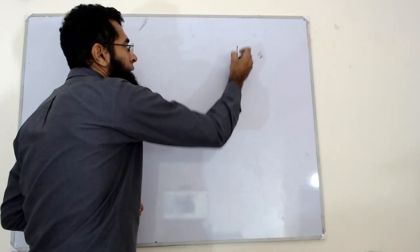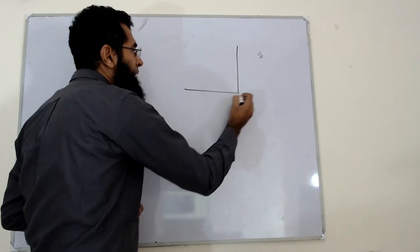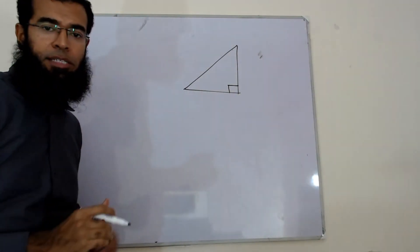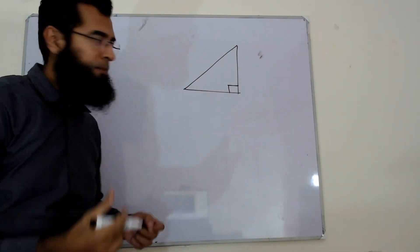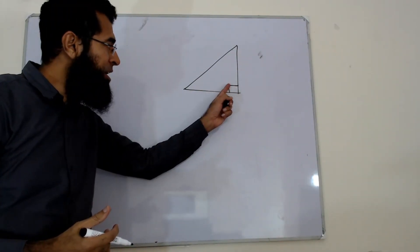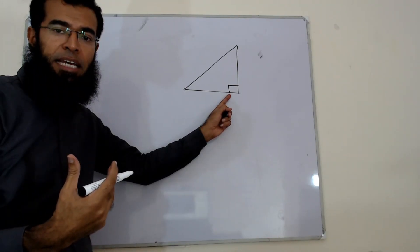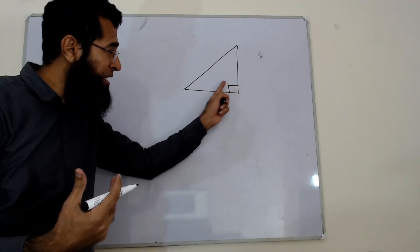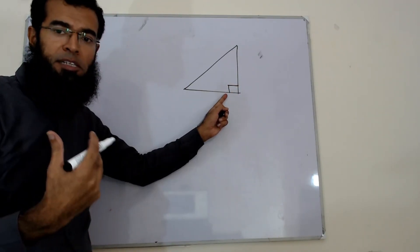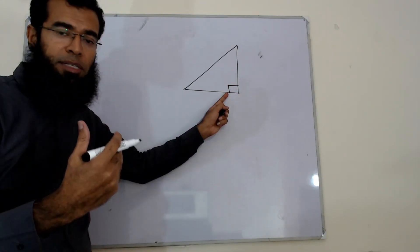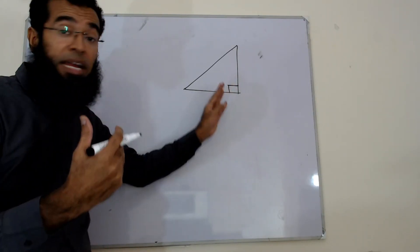Right angle triangles — what is a right angle triangle? A right angle triangle is one in which one angle is 90 degrees. We know the 90 degree mark; otherwise we cannot say it's a right angle triangle. This symbol is marked for the right angle, and then we say it's a right angle triangle.